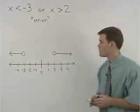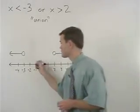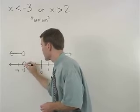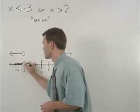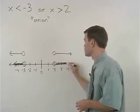So all we have to do is bring our two graphs down to the number line. So we have x is less than negative three and x is greater than two.